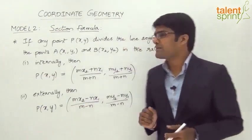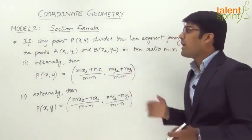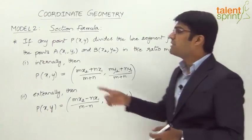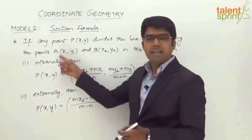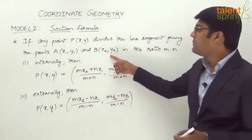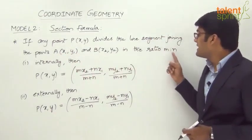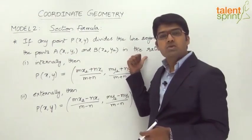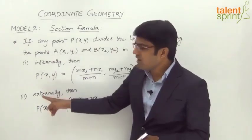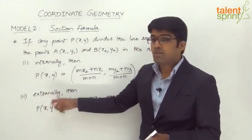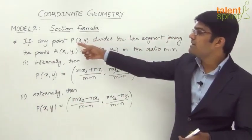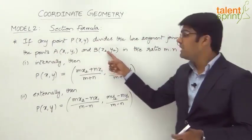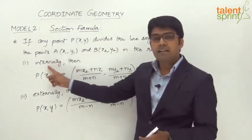Let us look at the statement first. It says if any point P of (x, y) divides the line segment joining the points A(x1, y1) and B(x2, y2) in the ratio m is to n. Now, there are two cases — it may divide in the ratio m is to n internally or externally. So, what happens when a point P divides a line segment joining two other points A and B in the ratio m is to n internally?